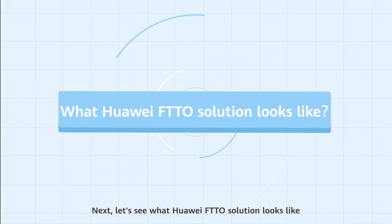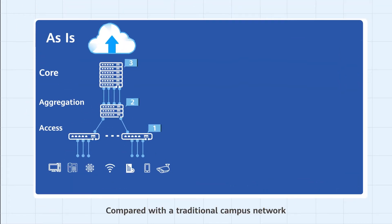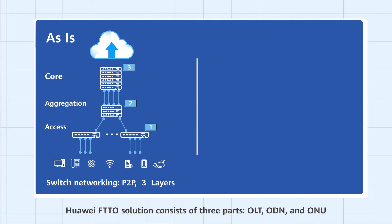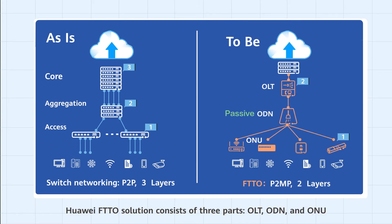Next, let's see what the Huawei FTTO solution looks like. Compared with a traditional campus network, the Huawei FTTO solution consists of three parts: OLT, ODN, and ONU.